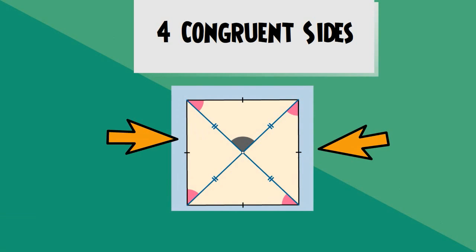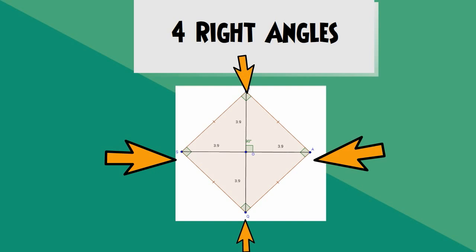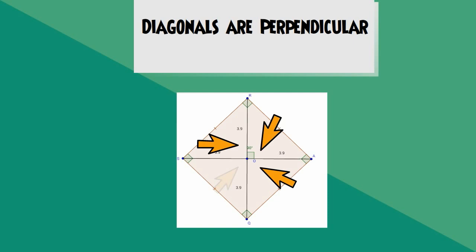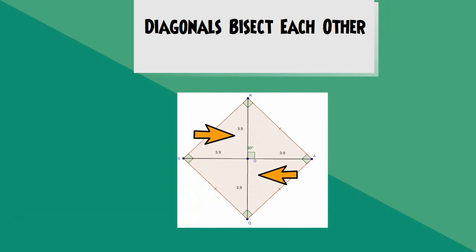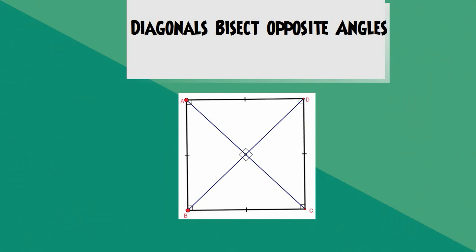Along with four sides, a square has four right angles. The diagonals of a square are perpendicular and create four right angles. The diagonals also bisect each other.